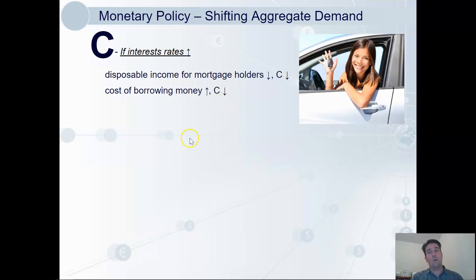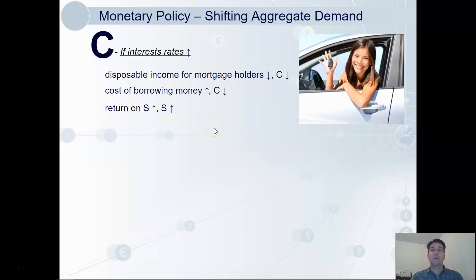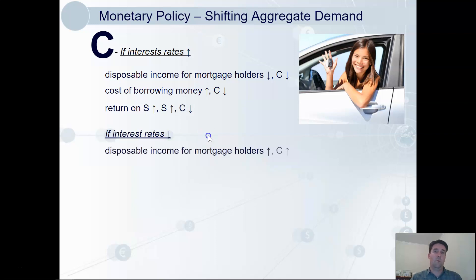Interest rates are also the reward for saving. So if you increase the reward, people will do more of it — they'll save more money. Increase the return, you increase the savings. Therefore, that's money that they are not spending, so consumption will fall. I think it's relatively straightforward to see that when interest rates are lowered, the reverse will happen — consumption will increase. We just see those things happening in reverse.